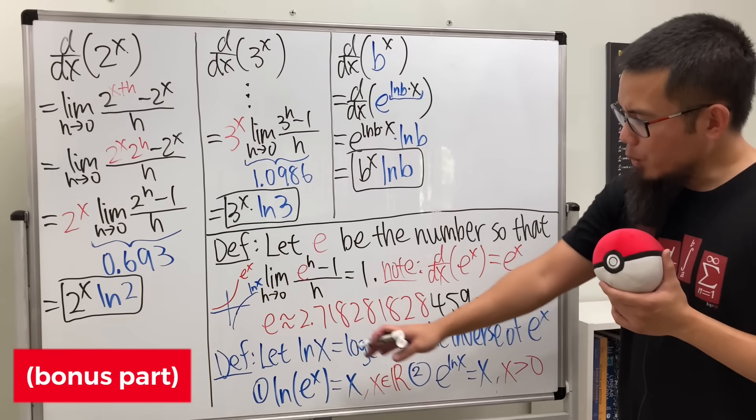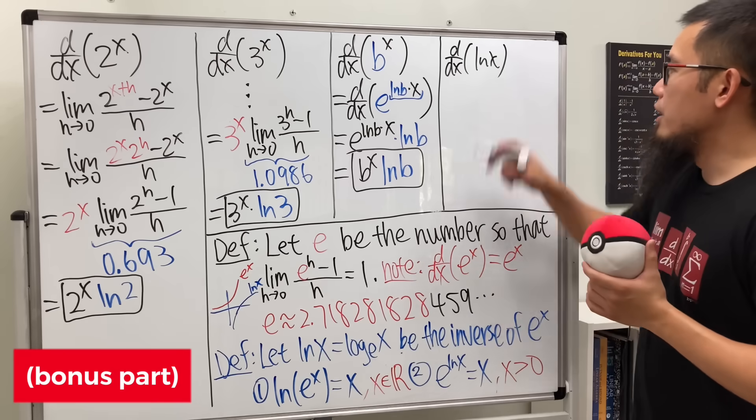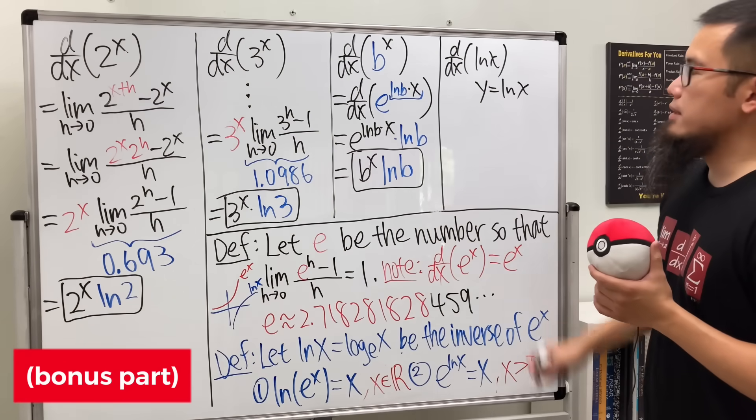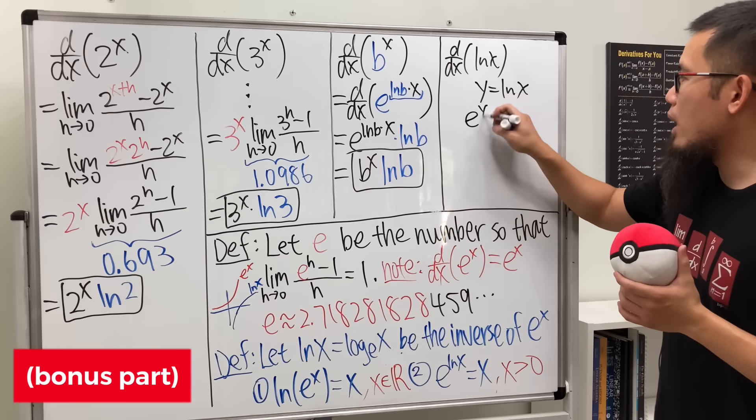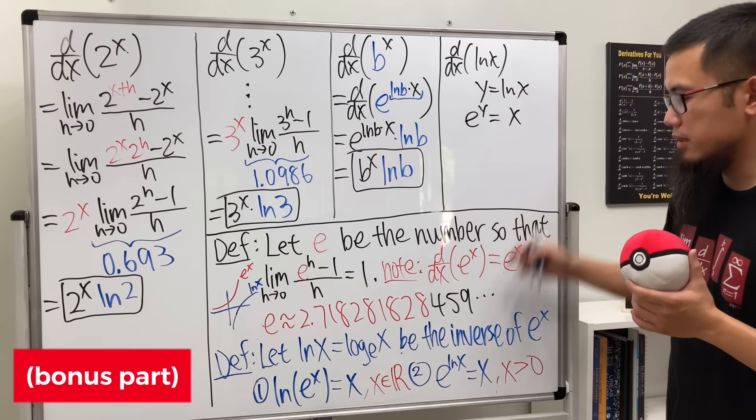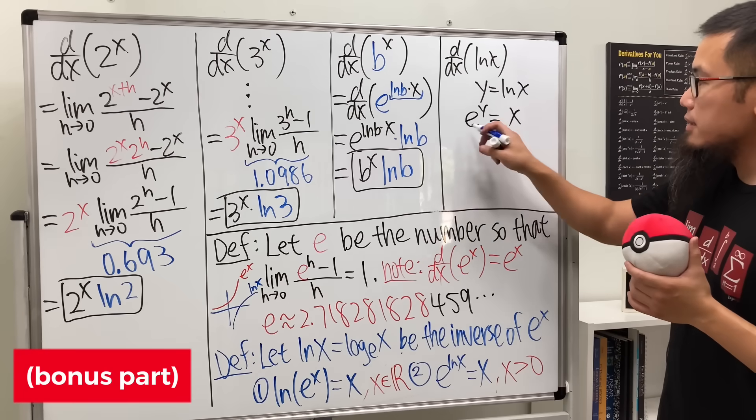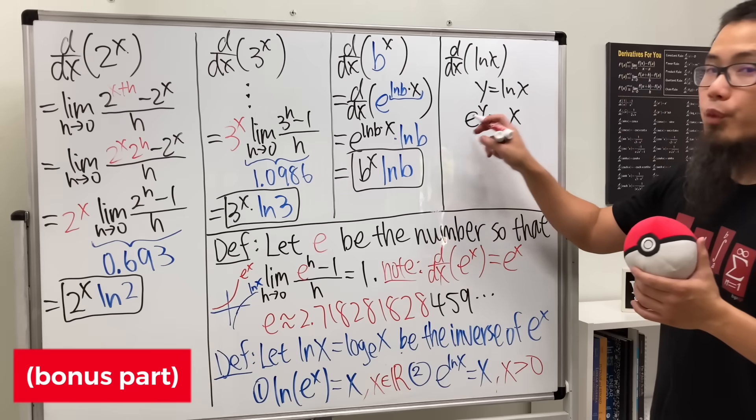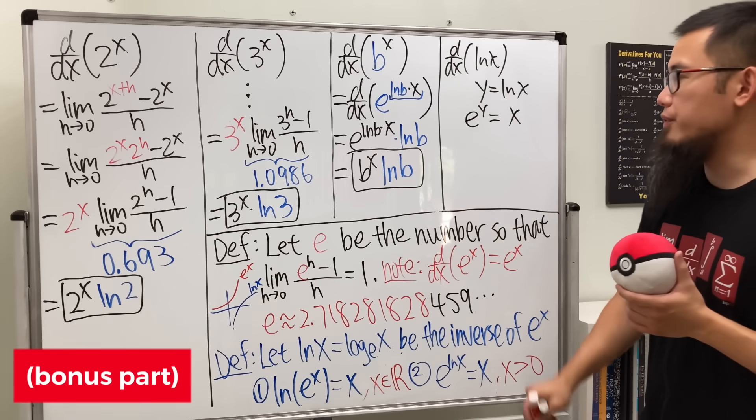Okay, here's the bonus part. We will differentiate ln x based on this definition right here. First, let y be equal to ln x. And then, we can just say e to the y is equal to x because ln is the inverse of e to the something. And this is so much better because we know how to differentiate e to the something, and also, we can just use implicit differentiation. So let's go ahead and do that right here.